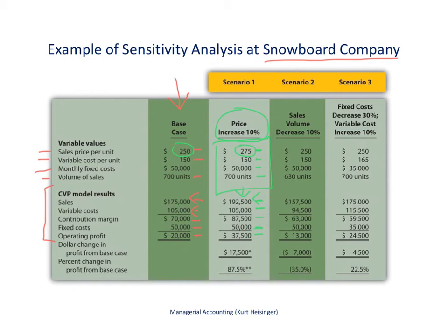The information at the bottom here relates to this new scenario compared to the base case. Our operating profit of $37,500, compared to the original base case of $20,000, means our profit would go up by $17,500 if the price went up 10%.